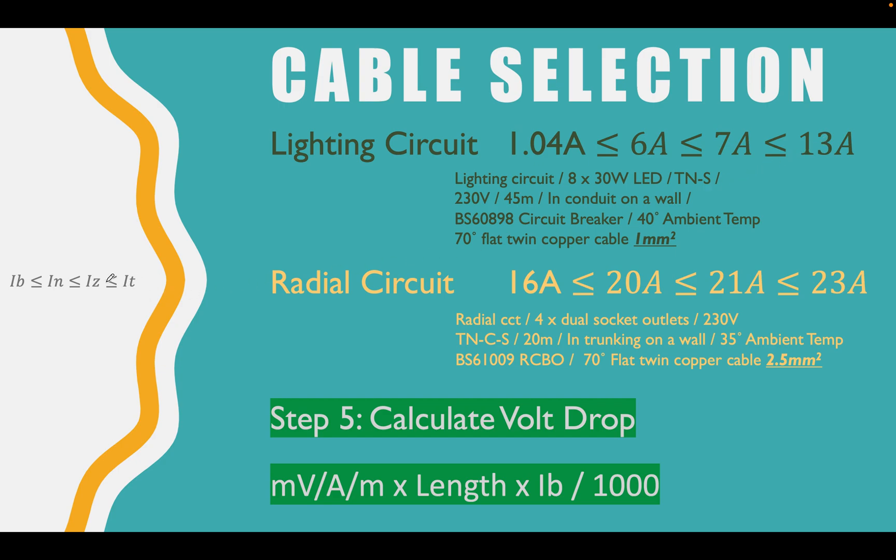Look over here, IT has to be greater or equal to IZ. IZ was the current carrying capacity of the cable in the conditions it's going to be in, 7 amps. And IT is the tabulated value for this actual cable that we choose, which is 13 amps. So we're happy with those selections on each side.